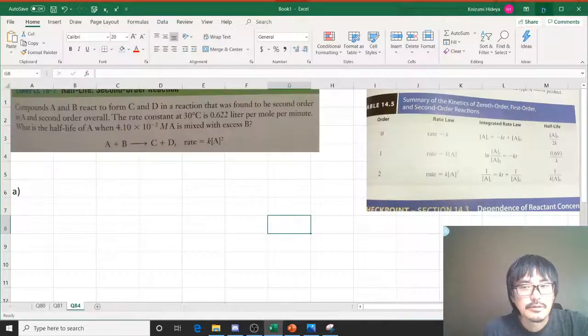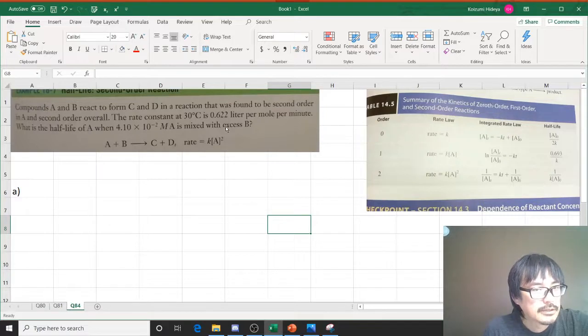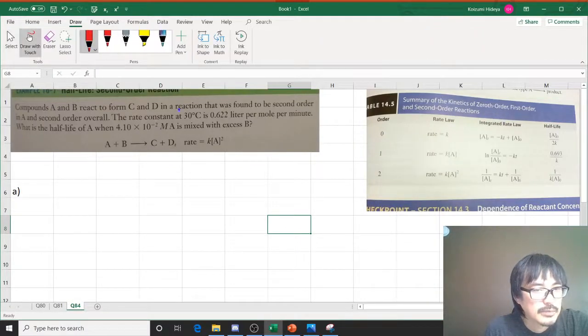Alright, let's do question number 84. Yes, there is a lot of information here, but what's important is that you have a rate expression right here, and the initial concentration is given right here. And then you're looking for the half-life, right?